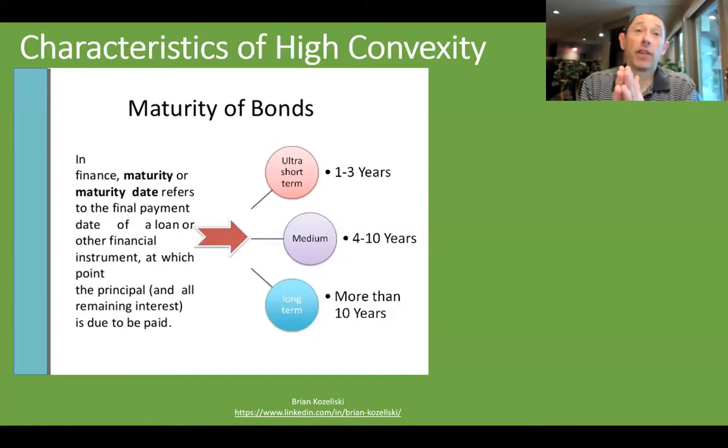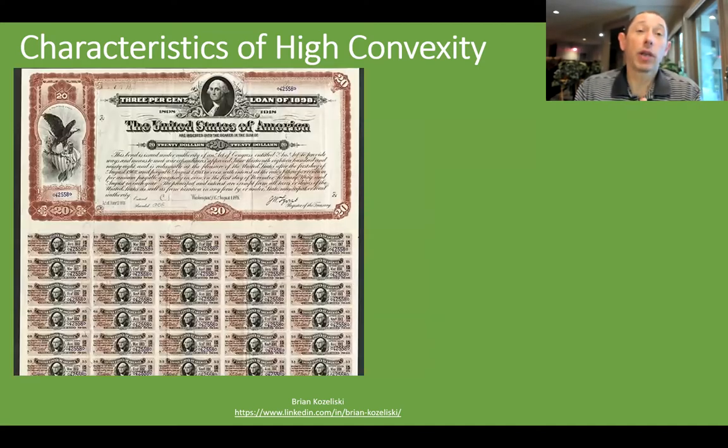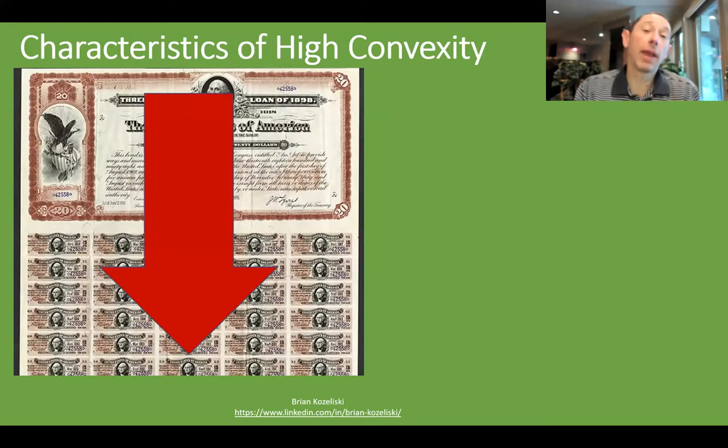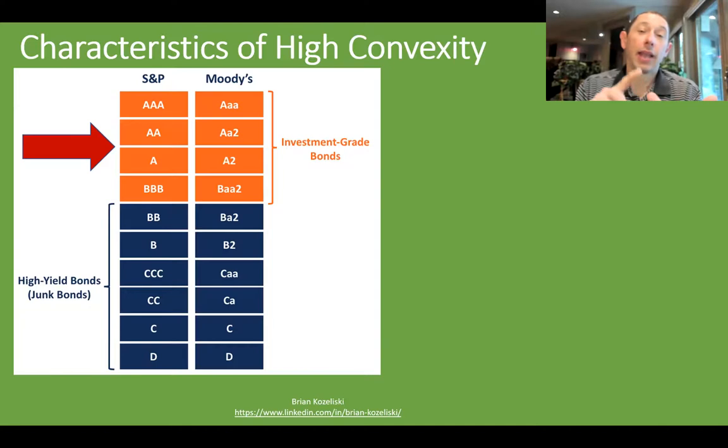So what are the characteristics of bonds that actually have this high convexity? That's a desirable characteristic. Well, it turns out that the longer the maturity, the higher the convexity. We also see that in terms of the coupon, the lower the coupon payment, then the higher the convexity. And finally, in terms of the yield, the lower the yield, the higher the convexity. So these are all desirable characteristics: longer maturity, lower coupon, and lower yield if you want that convexity.